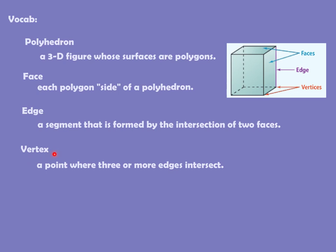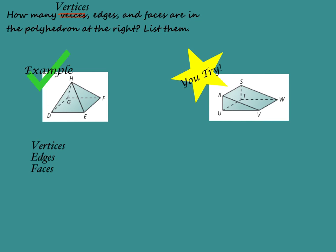Last, a vertex is a point where three or more edges intersect — notice all the points where all the edges come together. Our first problem says: how many vertices, edges, and faces are in the polyhedron at the right? List them.